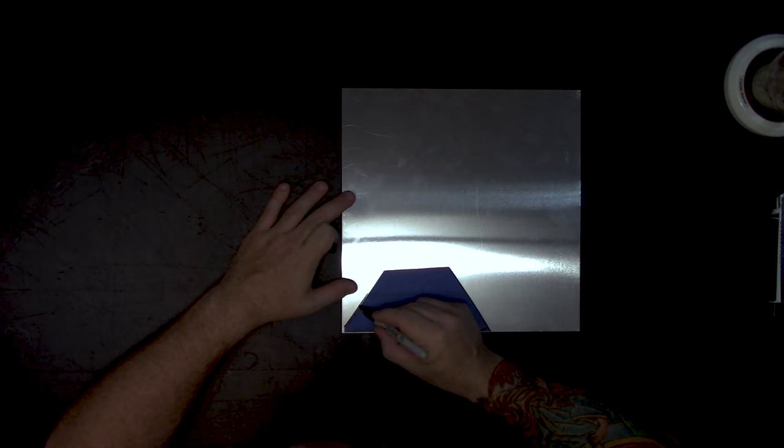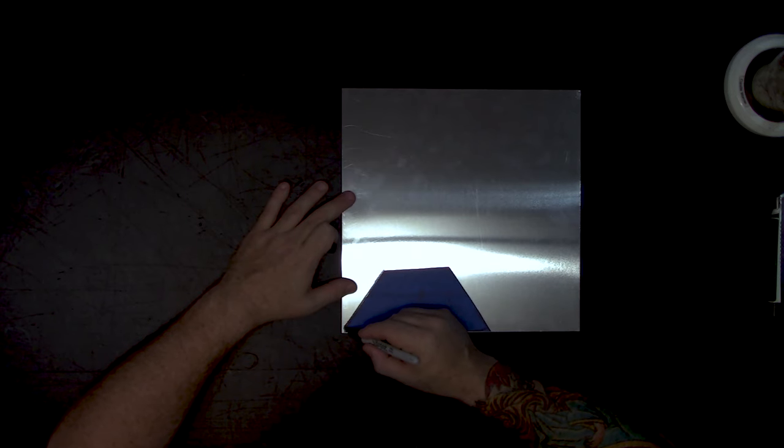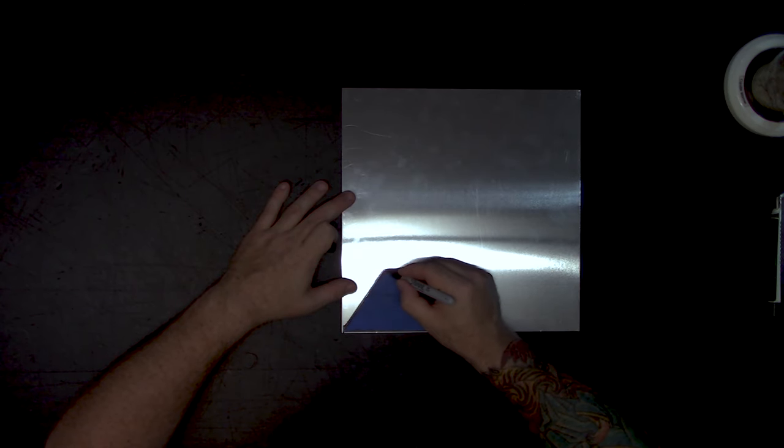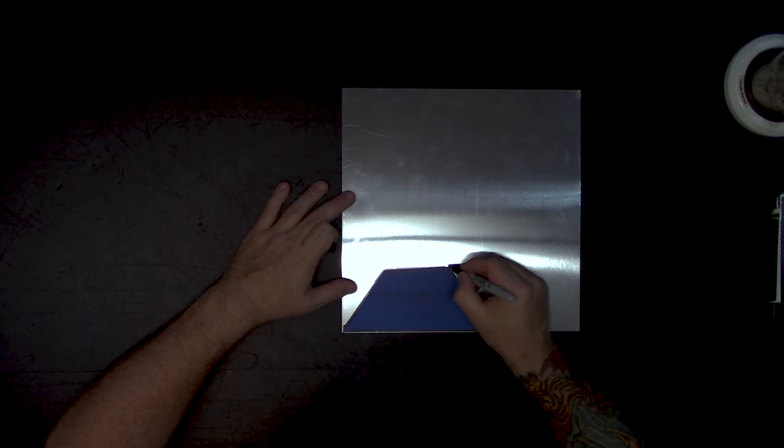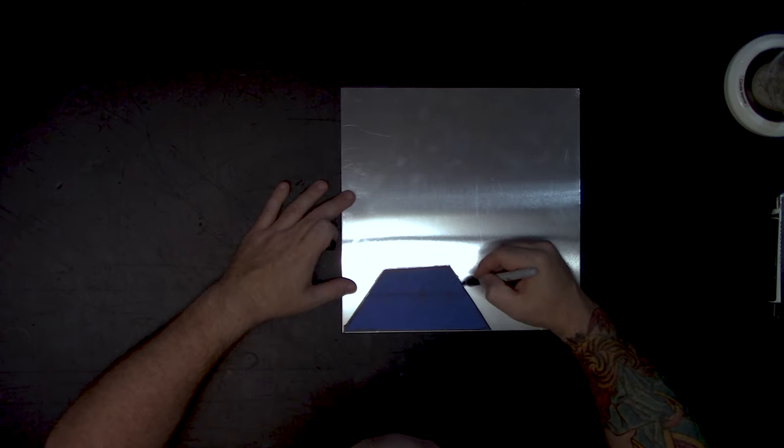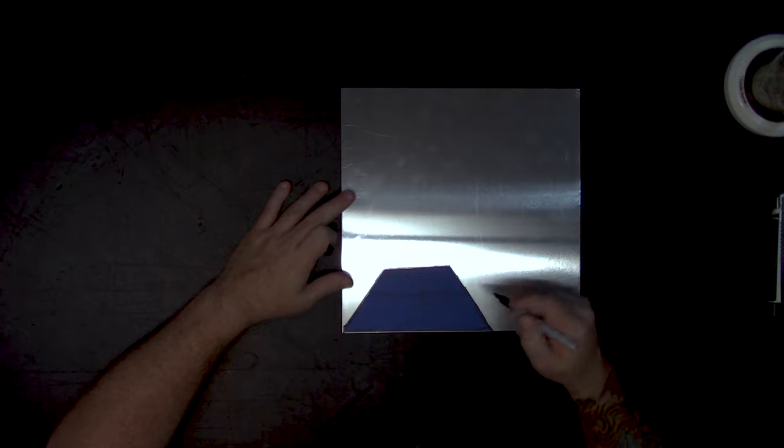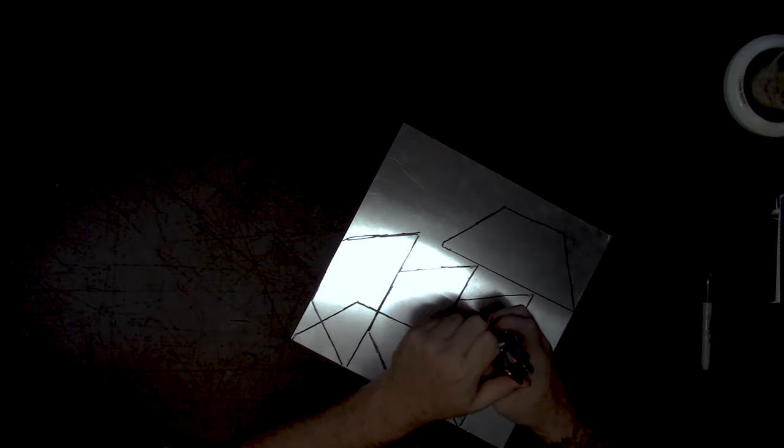This piece is just a one foot by one foot piece of sheet metal I got from Home Depot, five or six bucks. I'm just using a Sharpie to mark our pattern. We're going to need four of these. Then we'll take our tin snips and cut ourselves out some shapes.